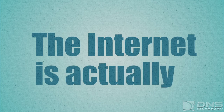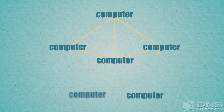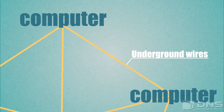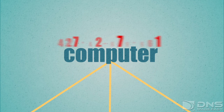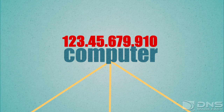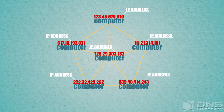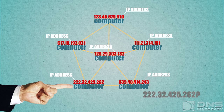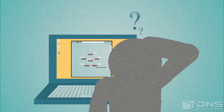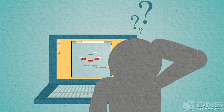The Internet is actually a massive collection of computers that are connected to one another by underground wires and identified by a series of numbers known as IP addresses. While handy when it comes to identifying where specific computers are on the network, these numbers were not conducive to everyday web browsing.